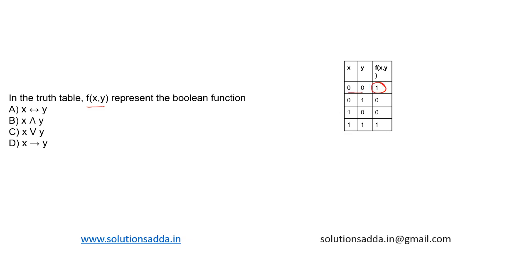In the other two cases the output would be zero. The options given are: x biconditional operator y, x and y, x or y, and x implies y. From the truth table itself we can understand